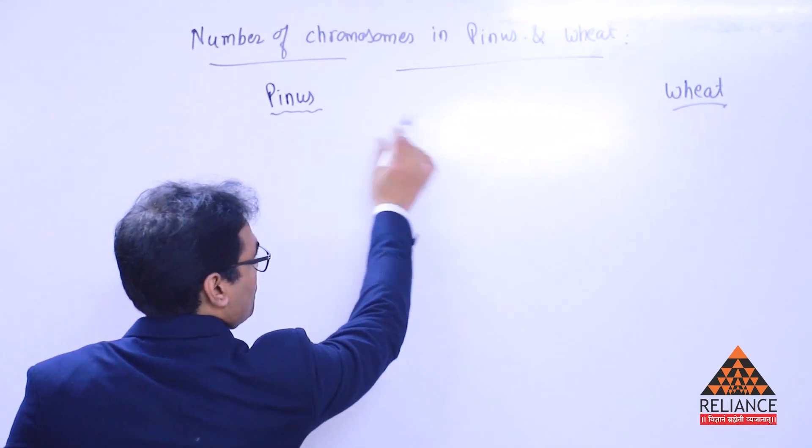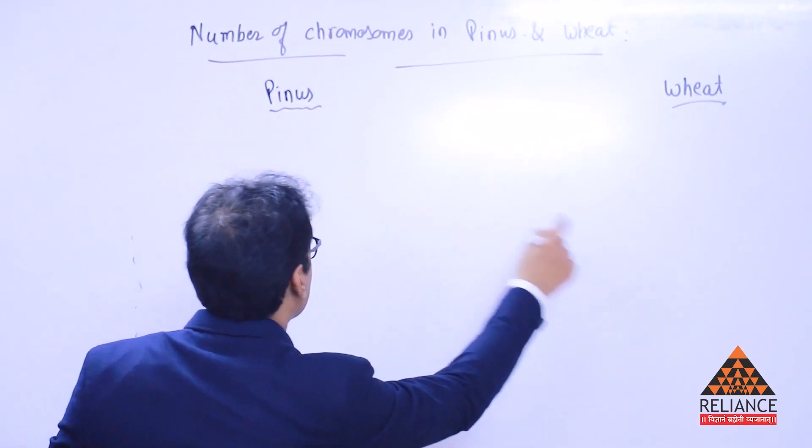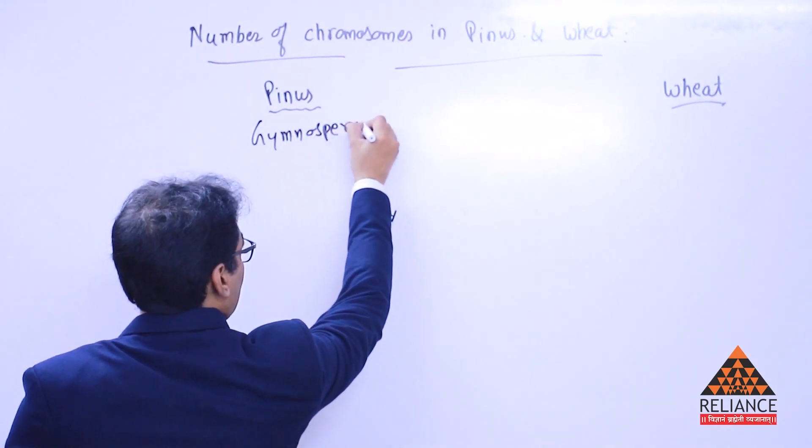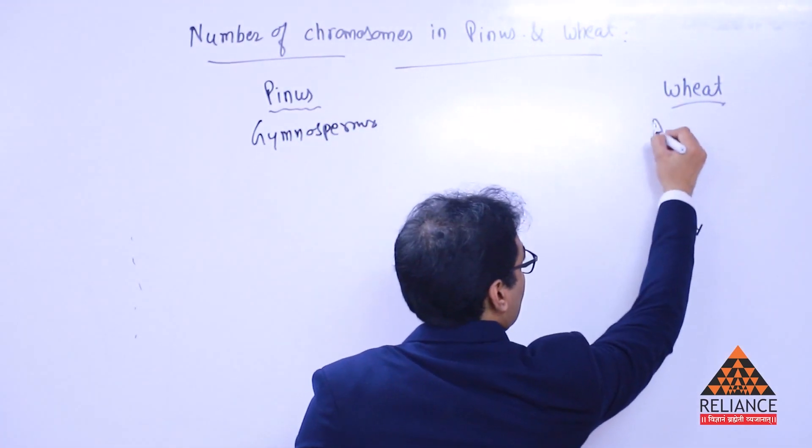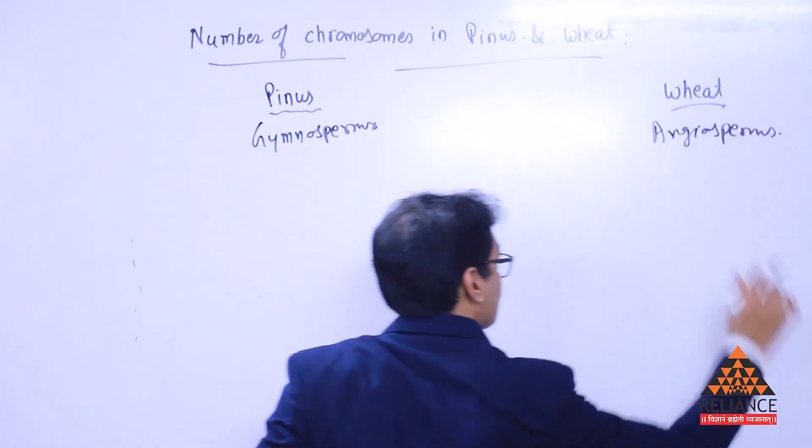Just understand that these two plants are absolutely different divisions. Pinus belongs to the gymnosperms, division gymnosperms. The other one, the wheat plant that we have over here, is an angiosperm. Obviously, it's a monocot.